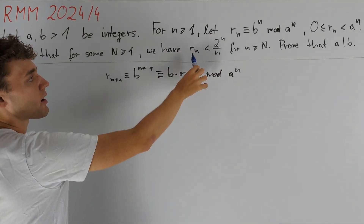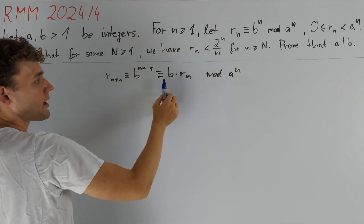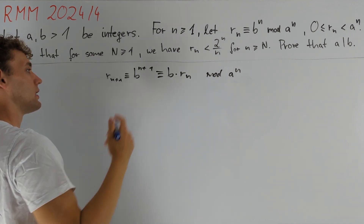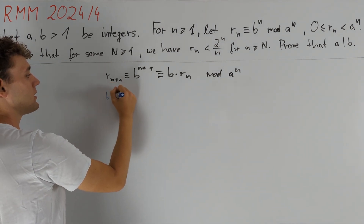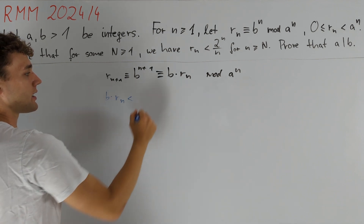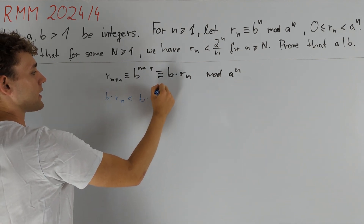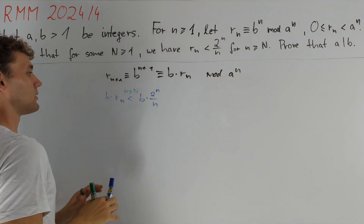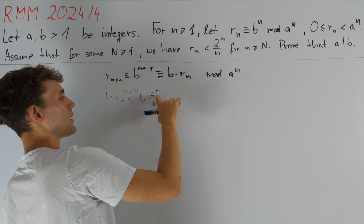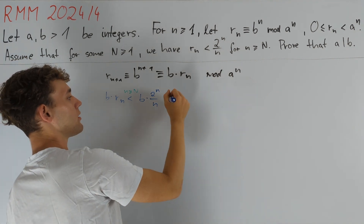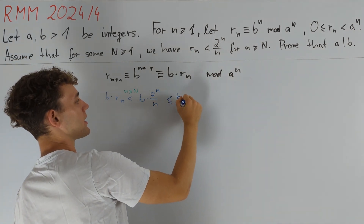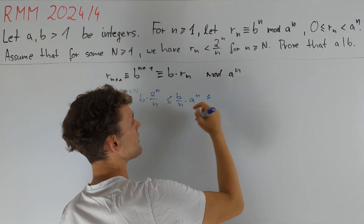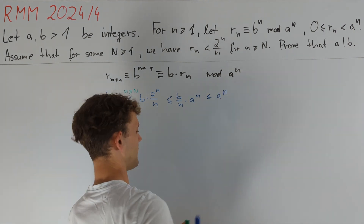Let us notice that we assume r_n grows quite slowly — so slow that b times r_n will clearly be less than a^n after some point. We have b times r_n is less than b times 2^n / n, at least when n ≥ N. Now we bound 2^n from above by a^n, so this is less than or equal to (b/n) times a^n. And if b ≤ n, then this will be less than or equal to a^n.